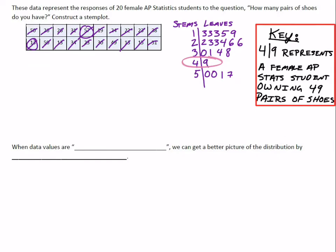In this next part, it says when data values are blank—notice the quote marks. In that blank, we want the phrase 'bunched up.' When data values are bunched up, we can get a better picture of the distribution by splitting stems. When you think of bunched up, think if we had to cram a big data set onto this stem and leaf plot—maybe it'll start to go off the page.